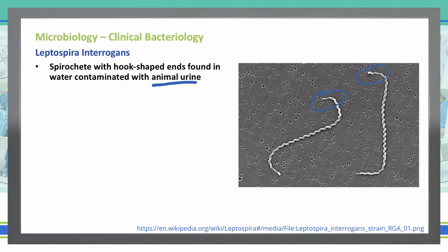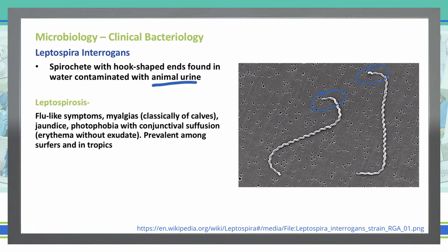It can cause two different kinds of diseases. Leptospirosis is a flu-like disease where patients get myalgias, classically seen in the calves, jaundice, and photophobia with conjunctival suffusion, which is an erythema without any exudate. It can also be prevalent among surfers and those in the tropics, because they're exposed to contaminated waters that have animal urine in them.